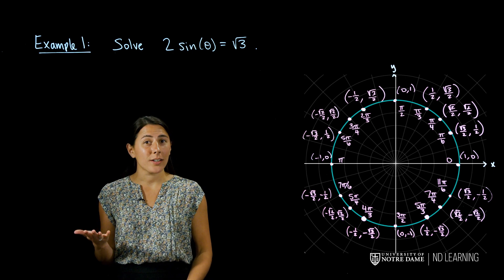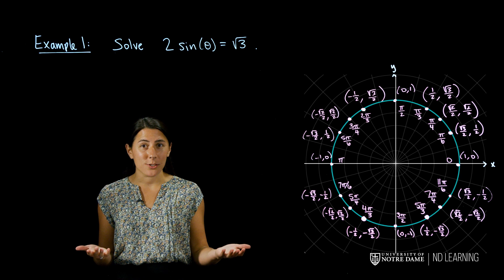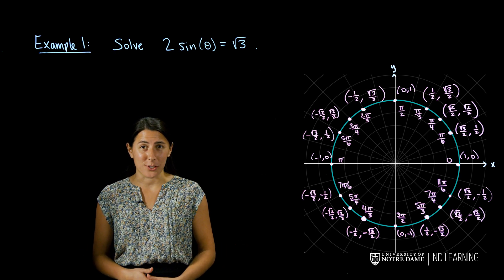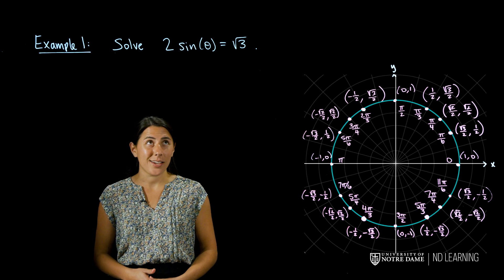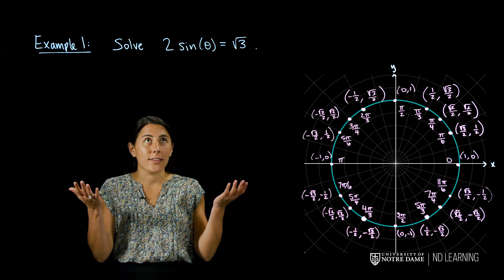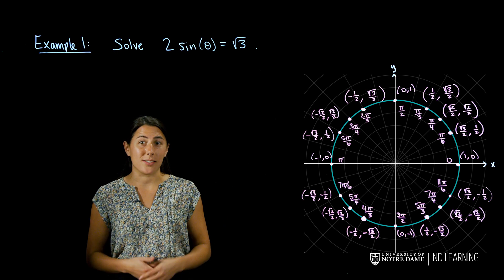Let's integrate our knowledge of trig functions and single variable equations by solving a trigonometric equation. So for example, if we wanted to solve 2 sine of theta equals square root of 3, what are the angles theta that satisfy this equation?